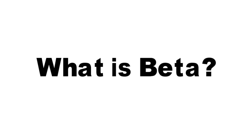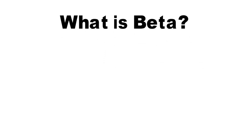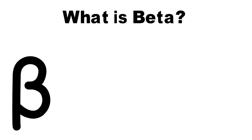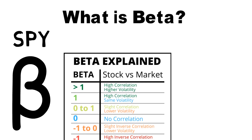To understand beta weighting, it is important to first understand what beta is. Beta is a measure of volatility risk relative to some benchmark. More often than not, this benchmark is SPY, which is an ETF that tracks the S&P 500 index. For the rest of this video we will just be using SPY as this benchmark, but note that you could change this and use some other security if you wanted to.